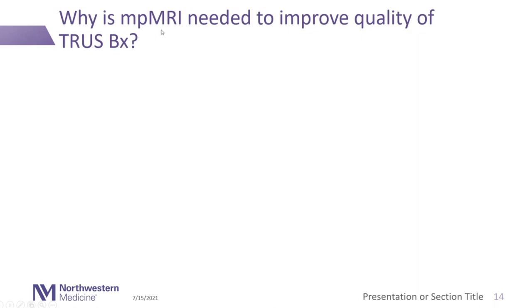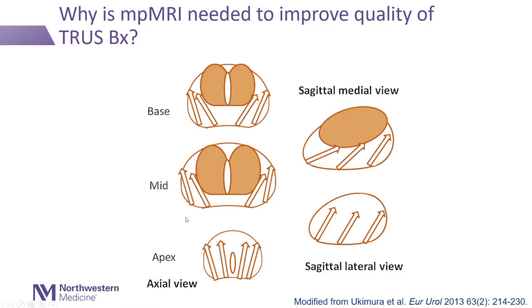Why is multi-parametric MRI needed to improve the quality of transrectal prostate biopsies? This begins to lay the groundwork for why a transperineal prostate biopsy may be better. When you do a transrectal biopsy, you are sampling, trying to enrich the sampling of the peripheral zone — but the anatomy of the prostate changes as you move through the base, mid, and apex, and you may not optimize detection. Here are examples of where prostate cancers could be hiding.